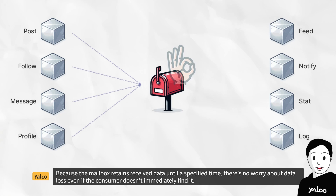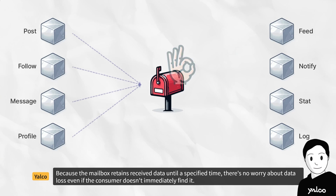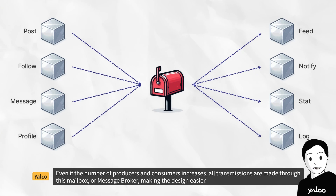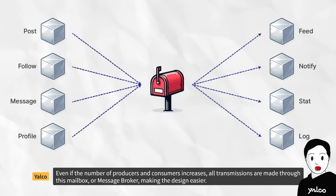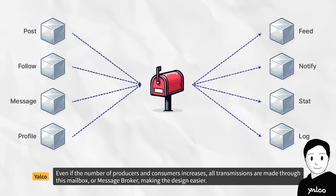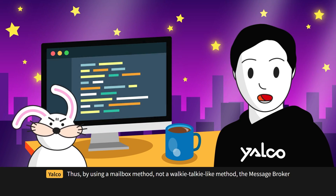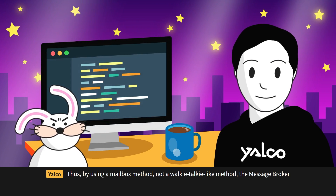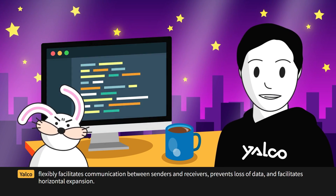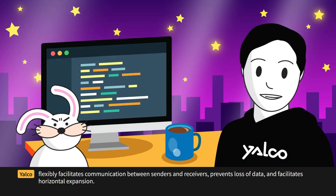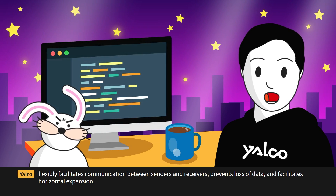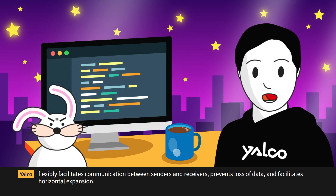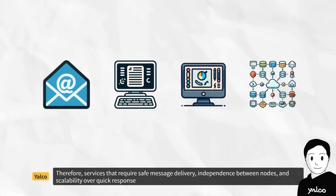Because the mailbox retains received data until a specified time, there is no worry about data loss even if the consumer doesn't immediately find it. Even if the number of producers and consumers increases, all transmissions are made through this mailbox or message broker, making the design easier. By using a mailbox method rather than a walkie-talkie-like method, the message broker flexibly facilitates communication between senders and receivers, prevents loss of data, and facilitates horizontal expansion.